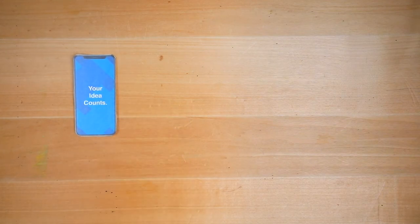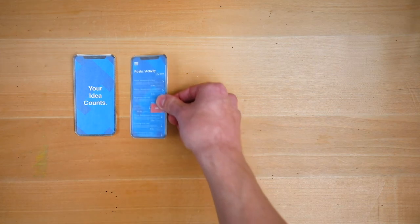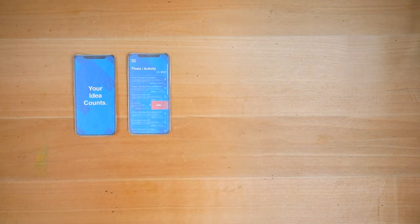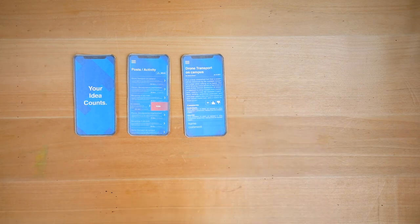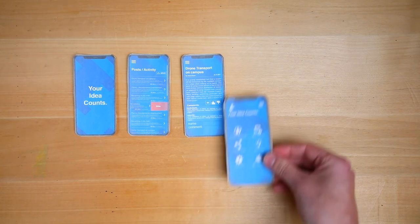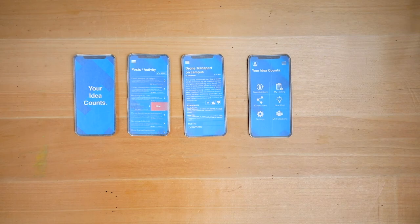Project number three is an app called Your Idea Counts. The goal of this app is to connect students who have ideas for startups or for change on campus. The app lets you post these ideas and it shows them in a feed. By clicking on an individual idea, a page pops up that shows the idea in more detail. People can comment and upvote ideas. You also have the ability to get in touch with the person that posted the idea.